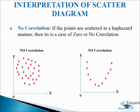Last, we come to absence of correlation or no correlation. If the plotted points on a graph paper show such a vast scatter that it is impossible to interpret any direction or degree from the diagram, it is called absence of correlation or no correlation. As you can see in the figure, r = 0, meaning there is no correlation between them. In this case, the coefficient of correlation is 0.